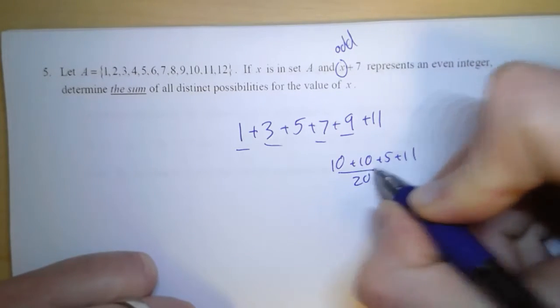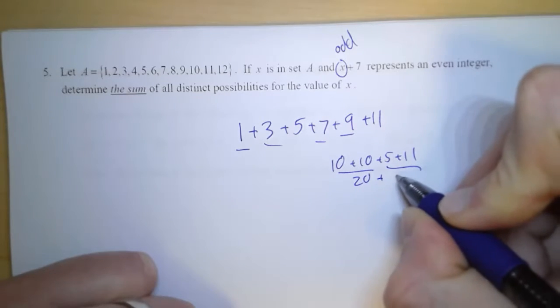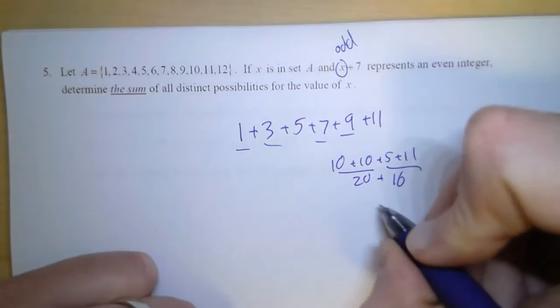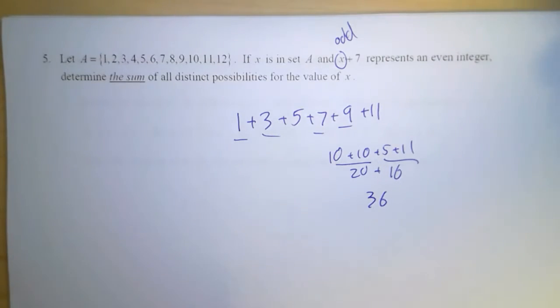So that's 20 for these two, plus 16. So 20 plus 16 is 36.